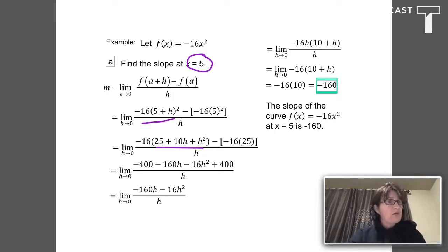So I would say that the slope of Y equals negative 16 X squared at X equals 5 is negative 160.